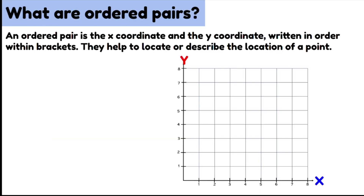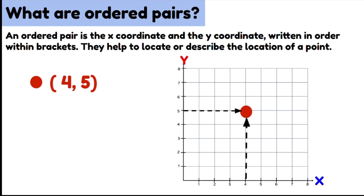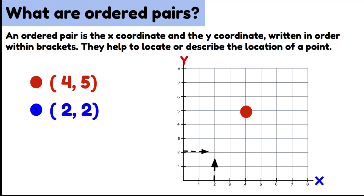Let's have a little bit more practice finding ordered pairs. We've got 4, 5 — so 4 is our x-axis and 5 is our y. The point where these two meet is where we put our dot. Let's try another one: 2, 2. So 2 on the x-axis and 2 on the y-axis. The point where these two meet is our location and we put our mark there.